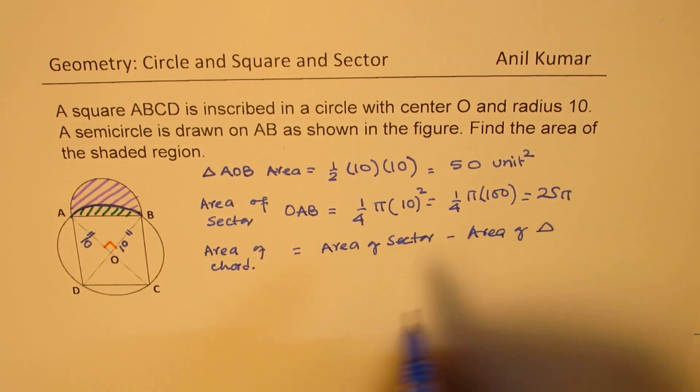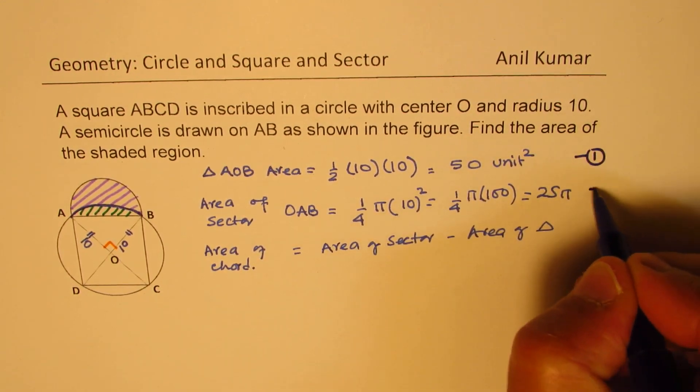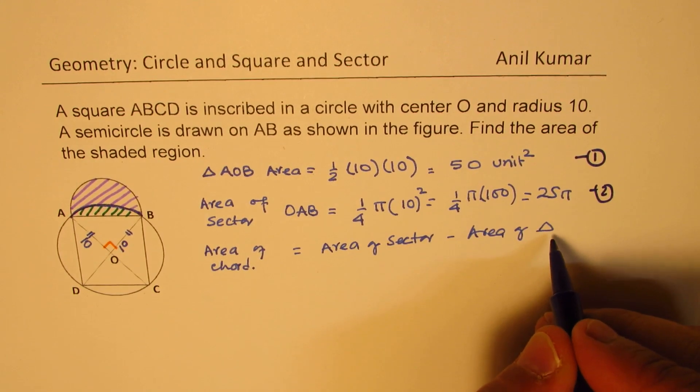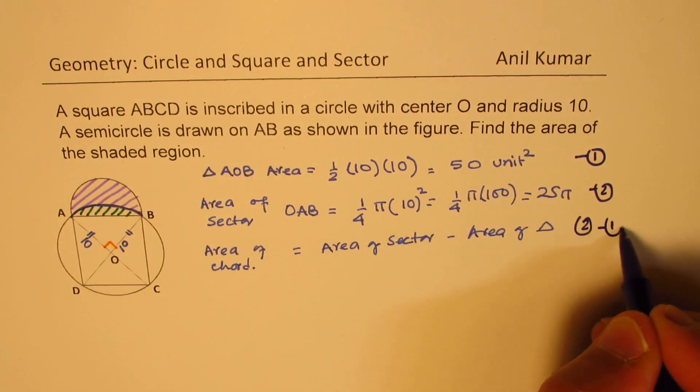which is equal to area of sector take away area of triangle, correct? Now, you know these two triangles we are talking about. Let's call this as our equation 1, equation 2, so this is basically area of the sector is 2 minus 1, correct?